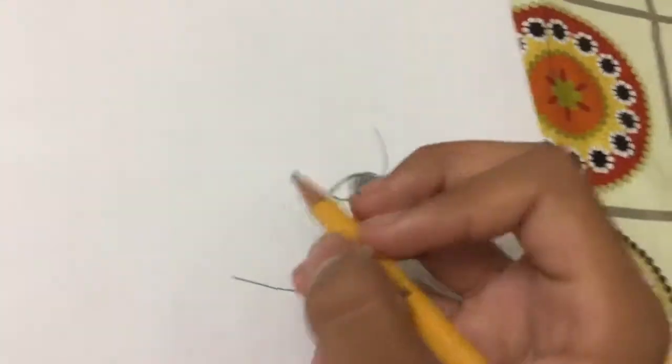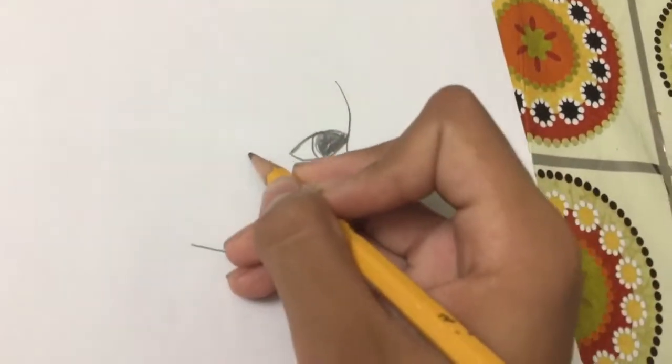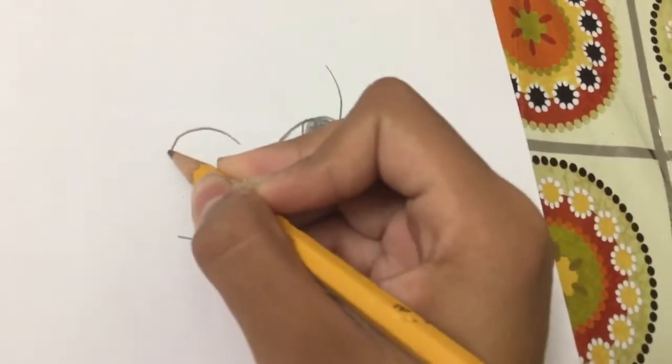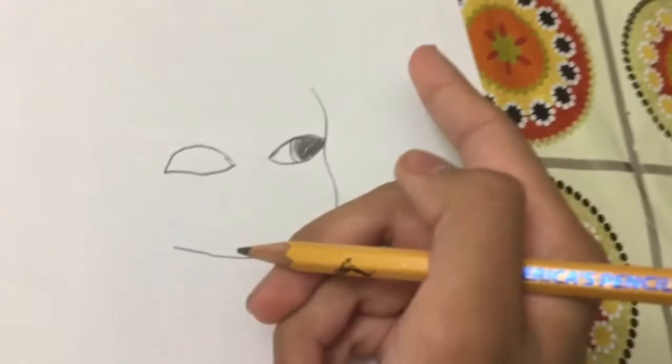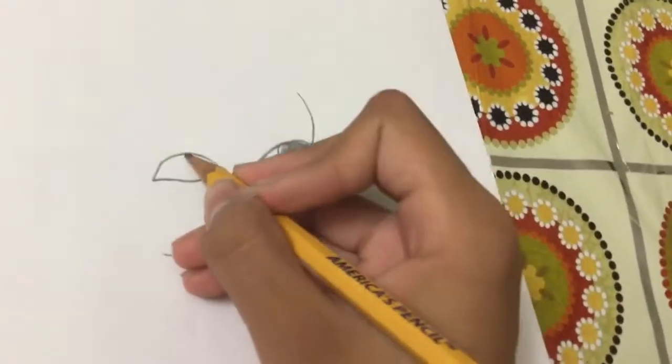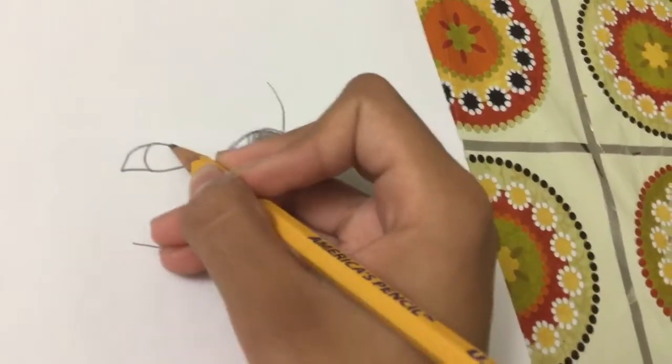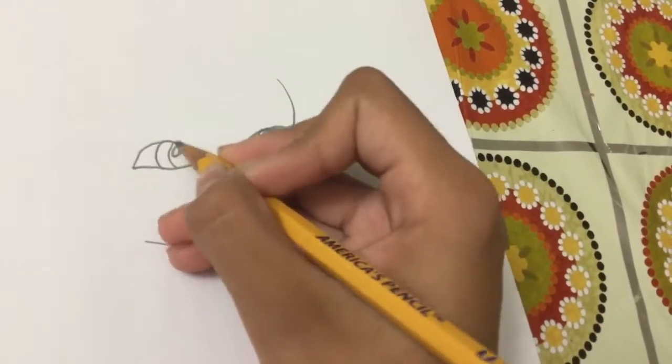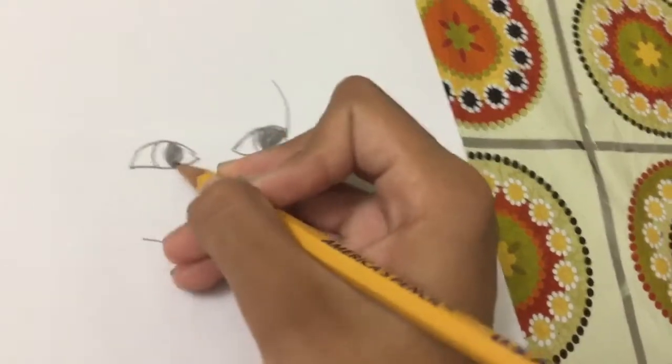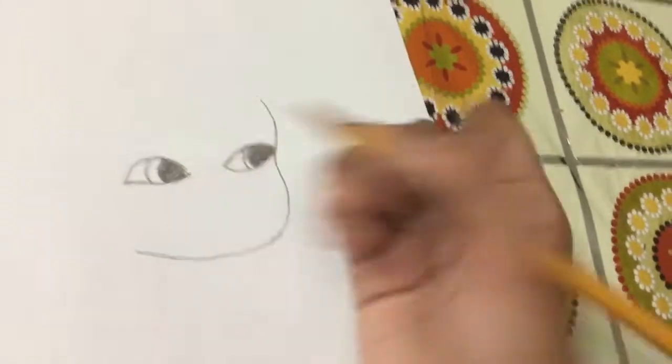Next, we're going to draw the same thing on the other side. So in this picture, he is looking this way. There you go. So that's his eyes.